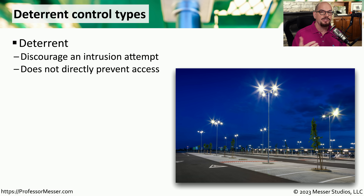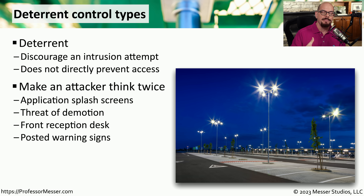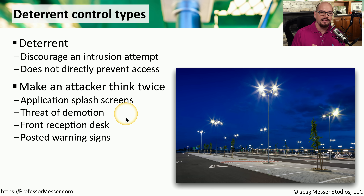Another important control type is a deterrent. Although a deterrent may not prevent someone from accessing a resource, it may give them a discouragement or have them think twice about the attack they're planning. For example, when you start an application, there may be a splash screen that provides security information and restricts unauthorized people from gaining access. Or there might be the threat of a demotion or dismissal if somebody accesses data they should not be accessing. There might also be a front reception desk greeting everyone who walks in, or warning signs telling people that gaining access to the facility would have consequences.